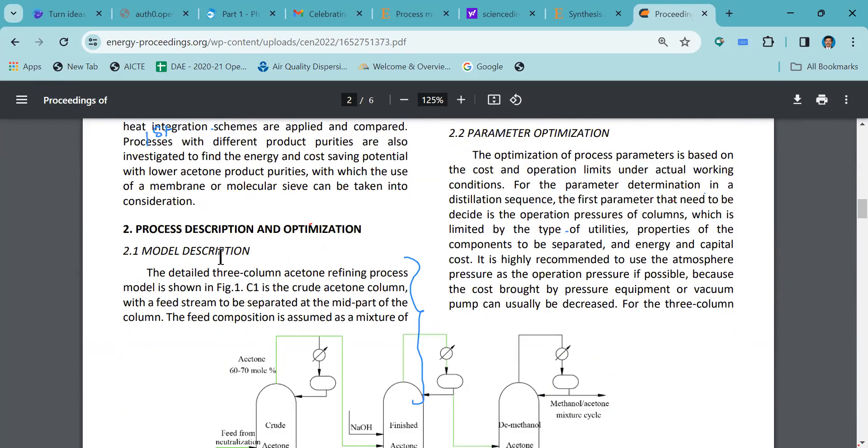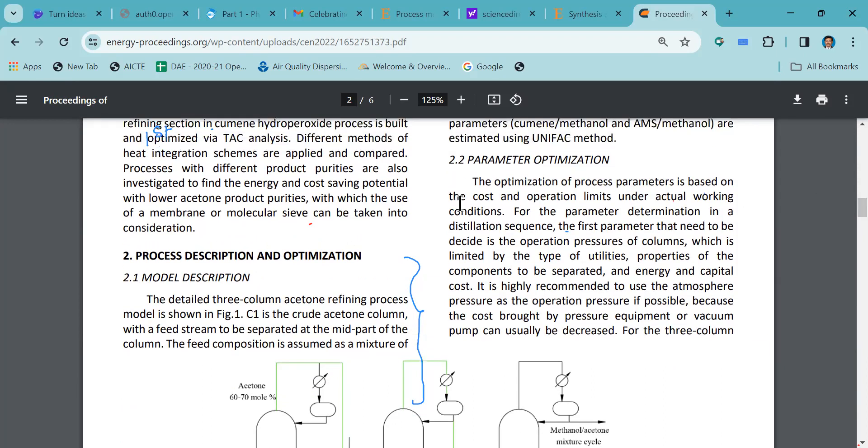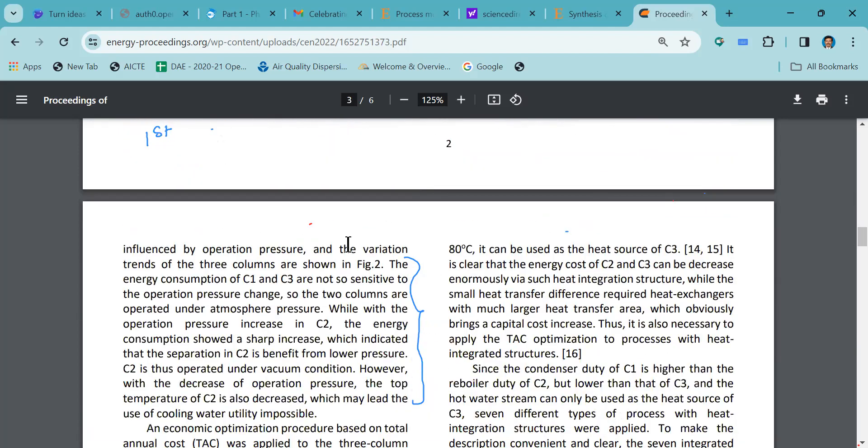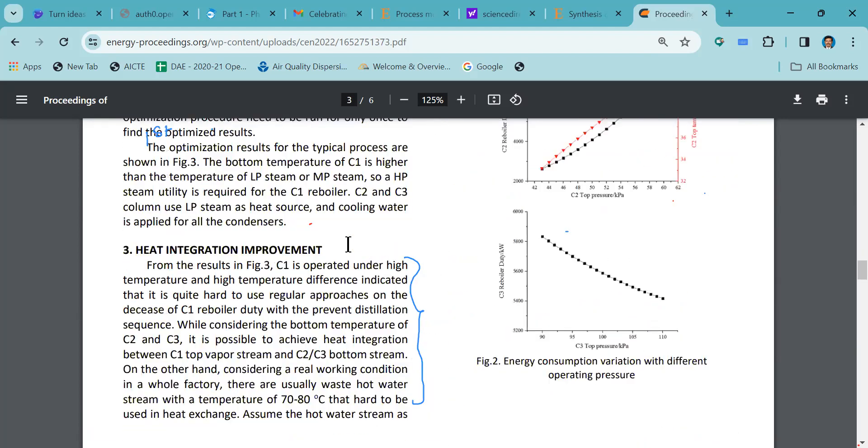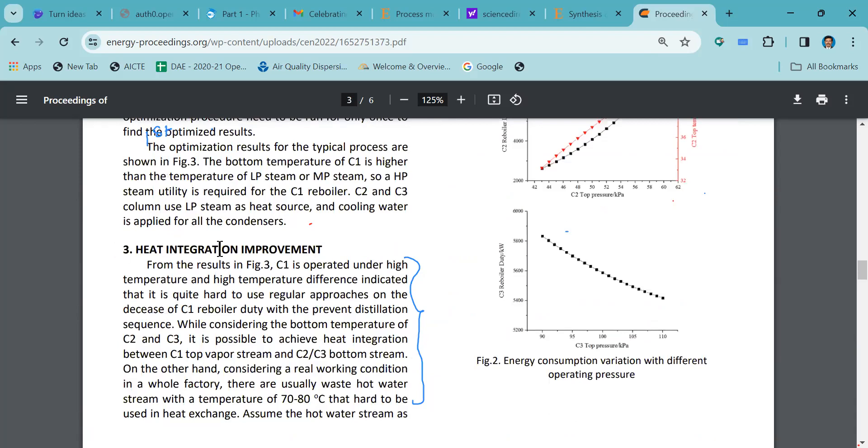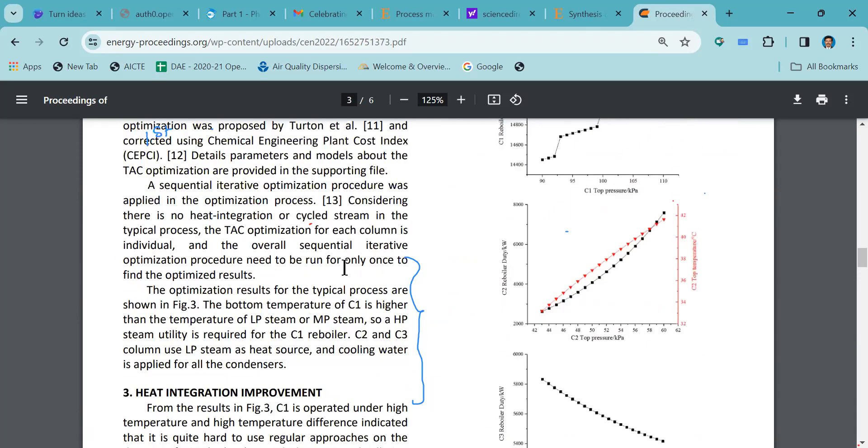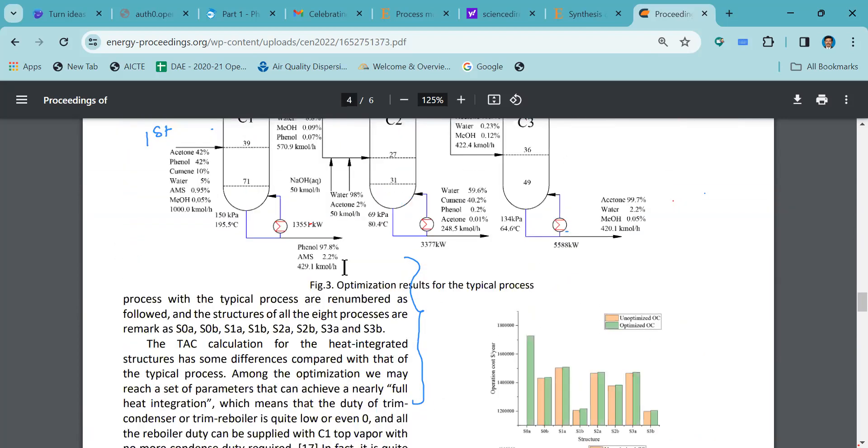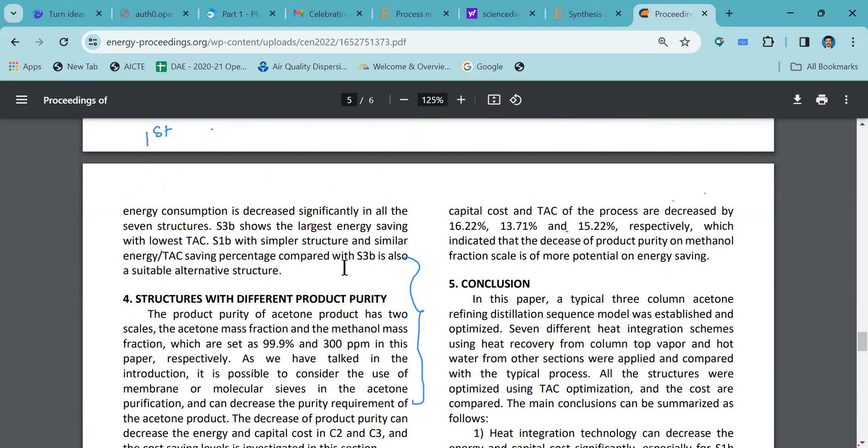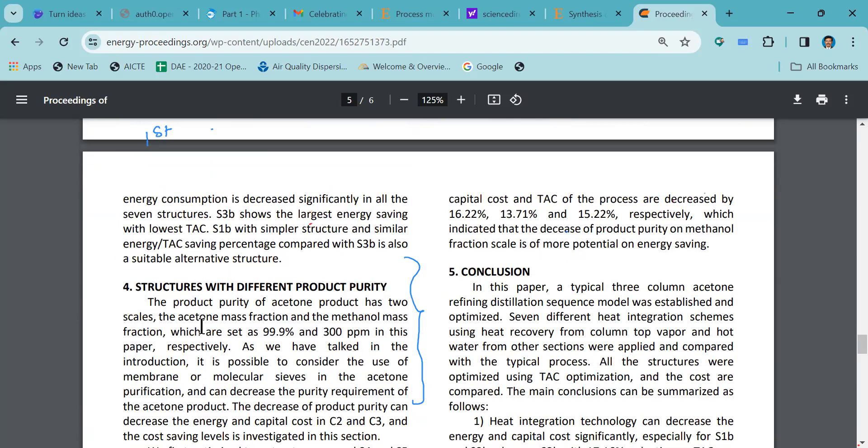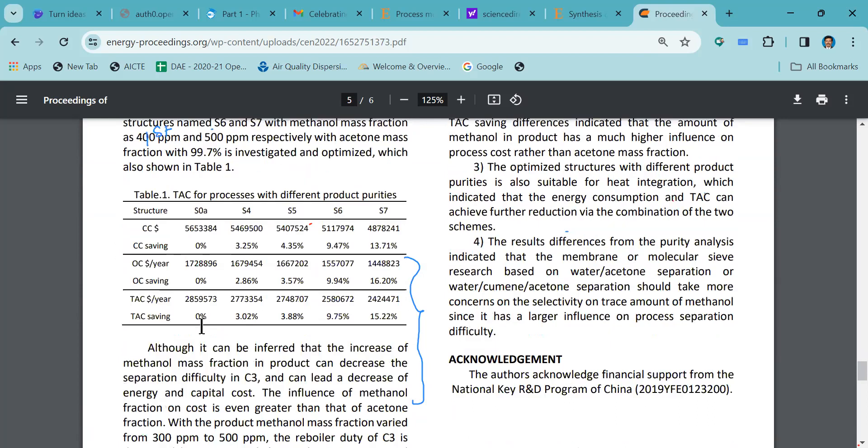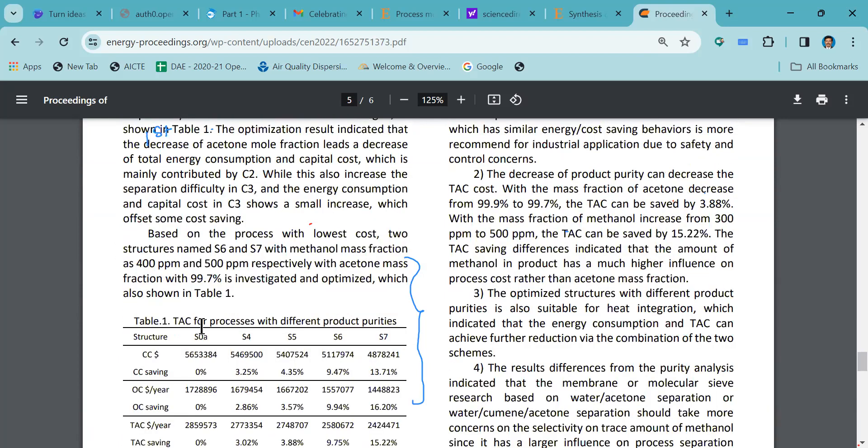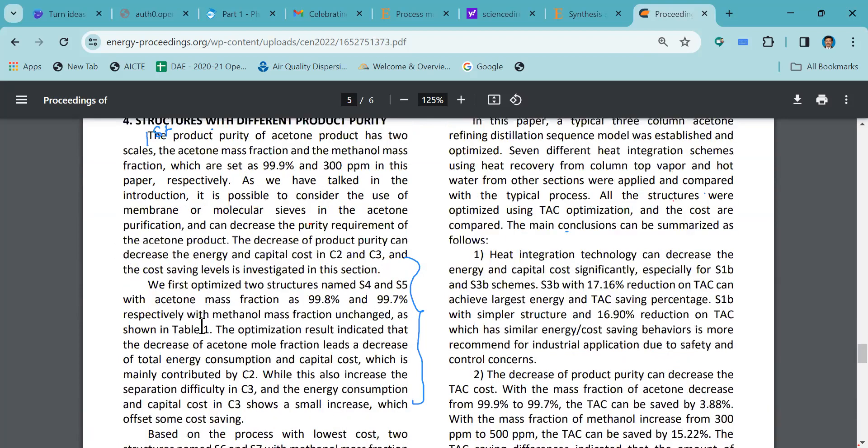Under process description, there is 2.1 model description and 2.2 parameter optimization. Going down, you can see the third section where heat integration improvement has been given. Under heat integration improvement, browse through the article again. The heat integration is discussed in one particular section. Fourth one is structures with different productivity. And the last one, the fifth section, of course we have seen conclusions.